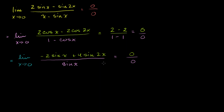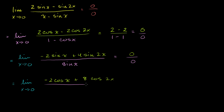Are we done? Do we give up? No, because this could have been our first limit problem — we still have an indeterminate form where both the numerator and denominator approach 0 as x approaches 0. So let's take the derivatives again. The derivative of negative 2 sine of x is negative 2 cosine of x. The derivative of 4 sine of 2x is 8 cosine of 2x, since the chain rule gives 2 times 4. The derivative of the denominator, sine of x, is just cosine of x.